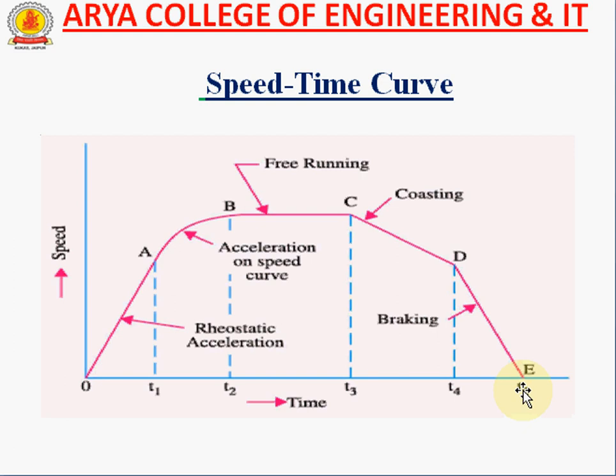In summary, there are five main phases: rheostatic acceleration (0 to T1), acceleration on speed curve (T1 to T2), free running (T2 to T3), coasting or power cut-off (T3 to T4), and braking or retardation (T4 to T5). These are the main points used in the speed-time curve.